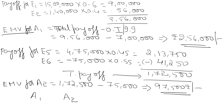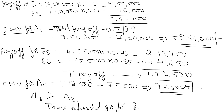Comparing A1 and A2: A1 has a value of Rs. 2,56,000 and A2 has Rs. 97,500. Since both are positive, whichever has the higher value is the better choice. A1 is greater, so the company should go for the showroom option. Thank you, have a nice day — we will continue in the next class.